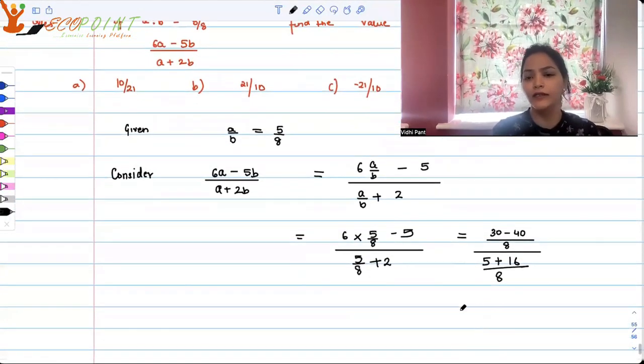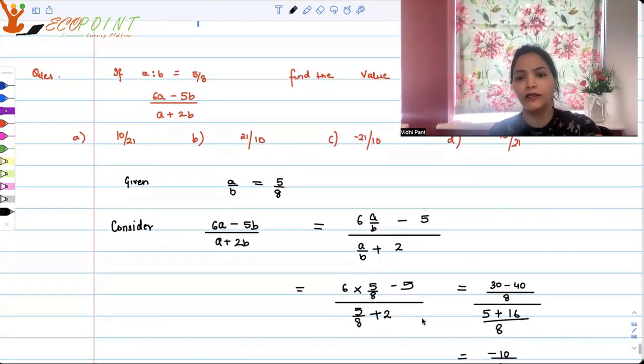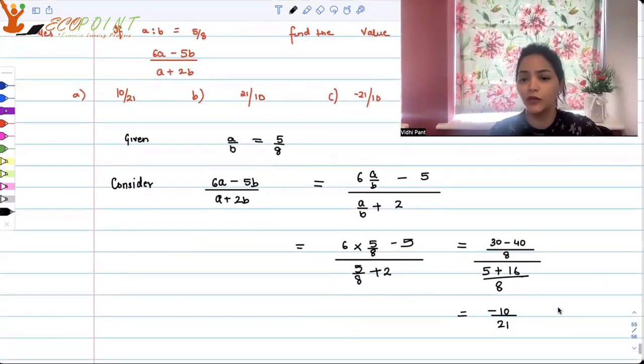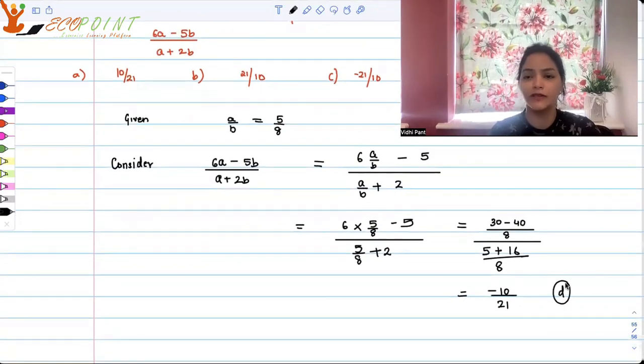So clearly the answer is minus 10 upon 21 because 8 cancels out and this is what you get, which is one of the options. Let's check. Do we have an option? Minus 10 upon 21 is the d option. So d option is the correct option.